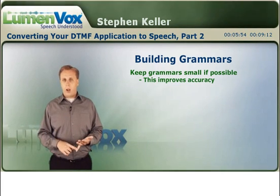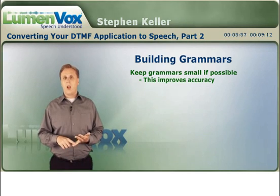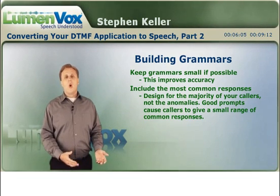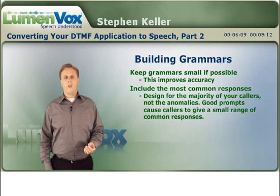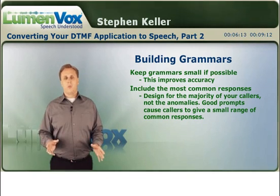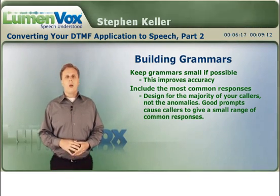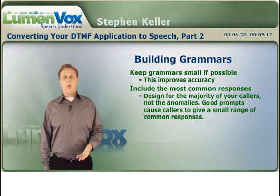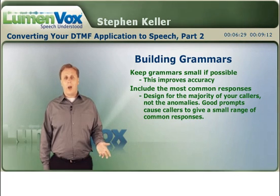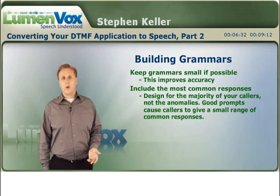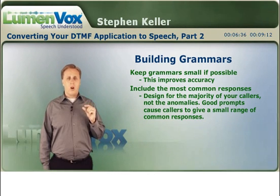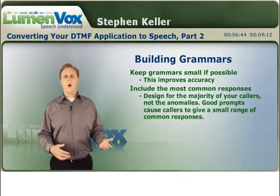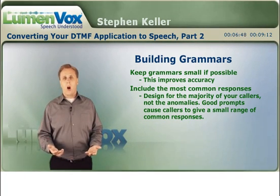If you're doing good directed dialogue prompts and making clear what options are available, most of your users will give you predictable responses. Design your grammars to accommodate those users. What you don't want to do is try to listen to the two to five percent of callers who will just give you outrageous responses — start swearing at the application or say off-the-wall nonsense. You can't add that nonsense into your grammars, because you're never really going to handle those oddball callers anyway, and when you increase the grammar for that small percentage, there's a greater chance that your well-behaved callers will get misrecognized. Always design your grammars for the majority of your callers, not the anomalies.